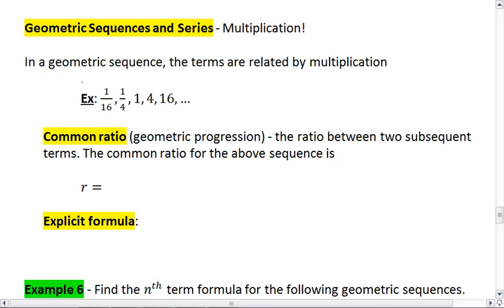I see that to get from one term to the next, I'm always multiplying by 1/4. This becomes my common ratio r.